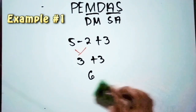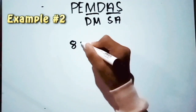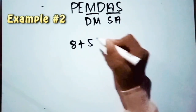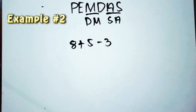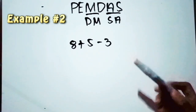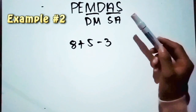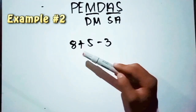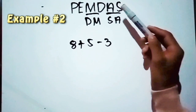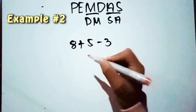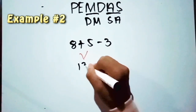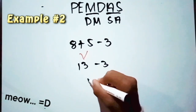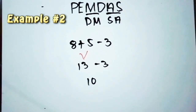Let's proceed to our next example: 8 plus 5 minus 3. Again, there are no P, E, M, or D, but there are two operations so we will use PEMDAS. We proceed to A and S. Since addition is already on the left side, we use A then S. So 8 plus 5 equals 13, then subtract 3 — the answer is 10.